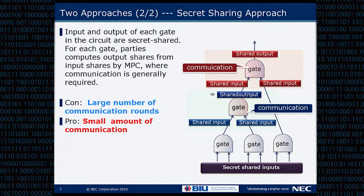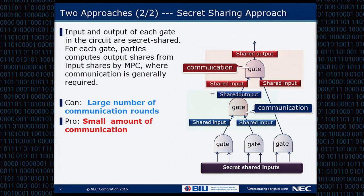The second approach is a secret sharing-based approach, where inputs and outputs are secretly shared and all parties engage in multi-party computation to generate shared outputs from shared inputs. Each individual computation requires a small amount of communication, so the total amount of communication required is small. However, communication is required at each gate, so the number of communication rounds is large.